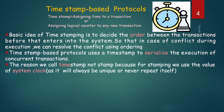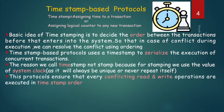Why is it called timestamp and not just stamping? Because for the stamping, we use the value of our system clock. The system clock, that is our CPU clock, is always unique and never repeats itself. This protocol ensures that every conflicting read and write operation is executed in timestamp order, so there is no conflict between read and write operations.